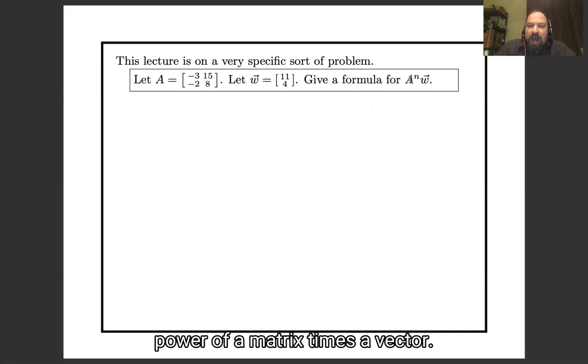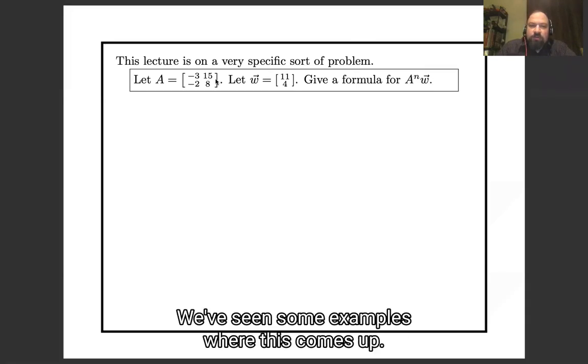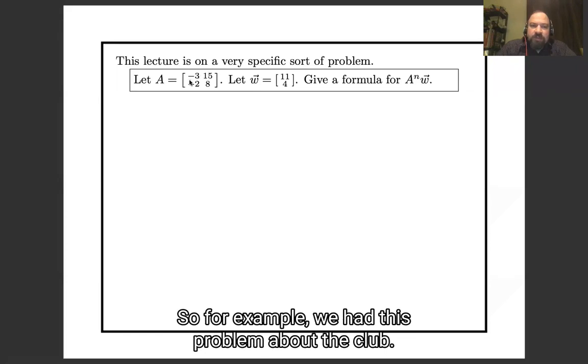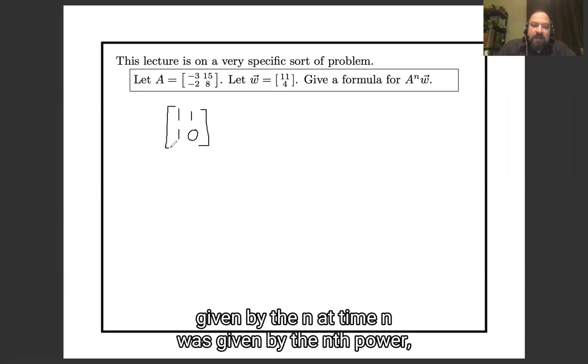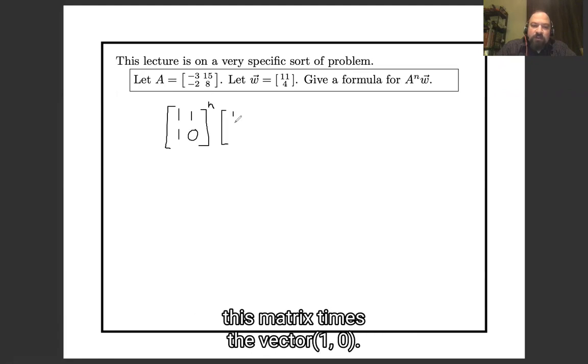This sort of expression, a power of a matrix times a vector, we've seen some examples where this comes up. For example, we had this problem about the club, and the number of members in the club at time n was given by the nth power of this matrix times the vector one zero.